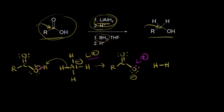The electrons in blue can pick up this proton, so that forms H2, hydrogen gas. Then we took a bond away from the aluminum, so the aluminum is now only bonded to three hydrogens, and that takes away its formal charge — so a formal charge of zero now on the aluminum.